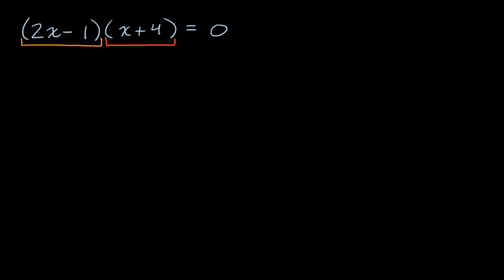Let me really reinforce that idea. If I had two variables, let's say a and b, and I told you a times b is equal to zero — can you get the product of two numbers to equal zero without at least one of them being equal to zero? The simple answer is no. If a is seven, the only way that you would get zero is if b is zero. Or if b was five, the only way to get zero is if a is zero.